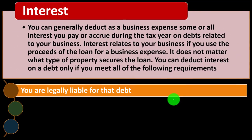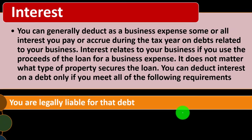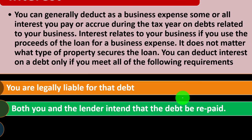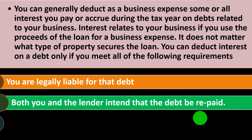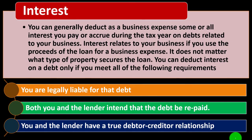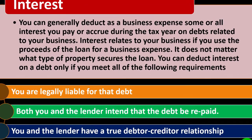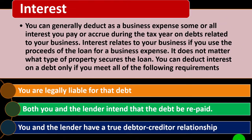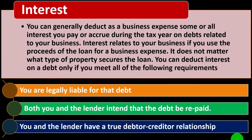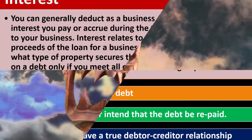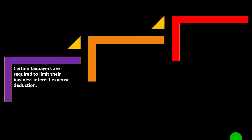You can deduct interest on a debt only if you meet all of the following requirements: you are legally liable for the debt; both you and the lender intend that the debt be repaid — so it must be a real debt; and you and the lender have a true debtor-creditor relationship. If it's an arm's-length transaction with a bank, that's clear. If it's a family member, people sometimes structure things unusually to reduce taxes, so it must be an actual real debtor-creditor relationship.